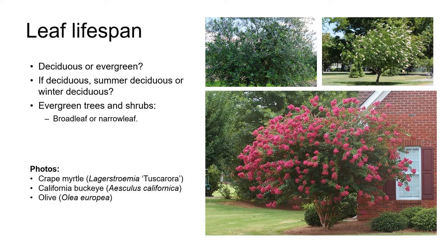Evergreen trees and shrubs can be further divided into broadleaf evergreens and narrowleaf evergreens. Broadleaf evergreens include trees such as the European olive, southern magnolia and coast live oak. Narrowleaf evergreens refers to conifers with their narrow, often needle-like leaves and includes plants such as pines, redwoods, firs, cypress and junipers.